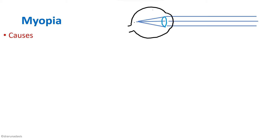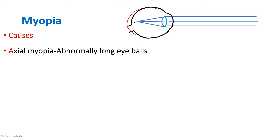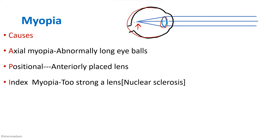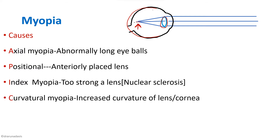The causes of myopia are: first, axial myopia — the myopia is due to an abnormally long eyeball, which is why the focus is in front of the retina. Second is positional, meaning it may be due to an anteriorly placed lens. Third is index myopia — the lens is too strong and is converging more, forming the image in front of the retina. Fourth is curvature myopia — the lens is more curved. These four causes can be remembered as EPIC: Axial, Positional, Index, and Curvature.